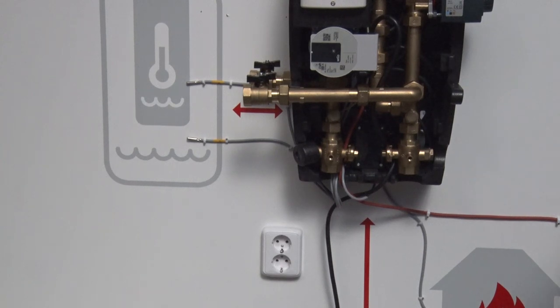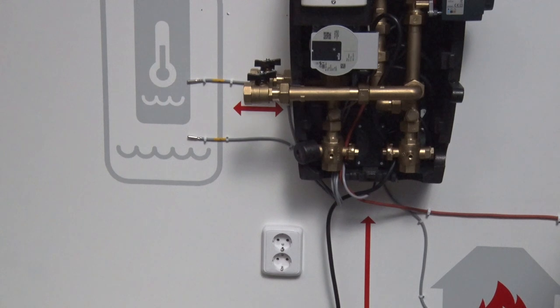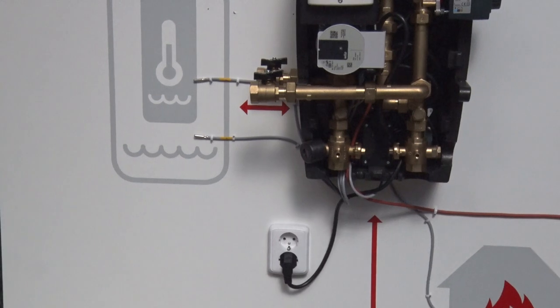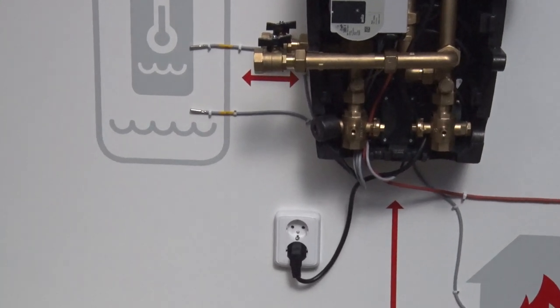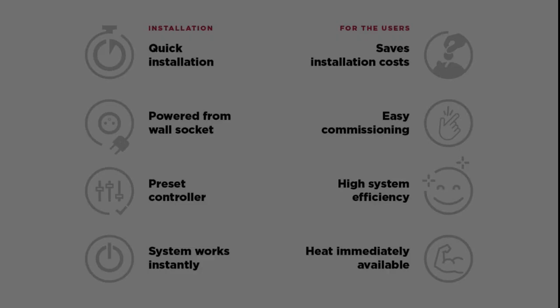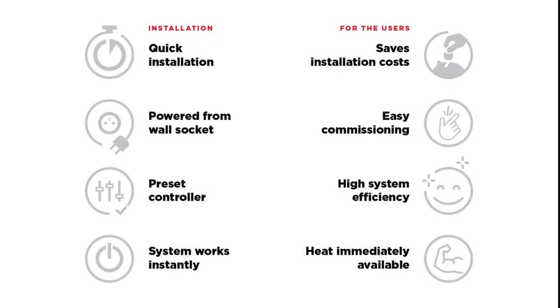After the hydraulic connections are finished, the system filled with water and sensors fitted, plug the power cord to a wall socket and commission the unit. The hybrid control.